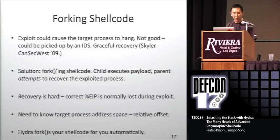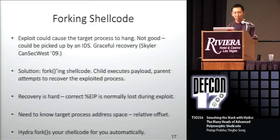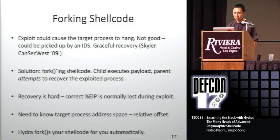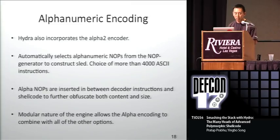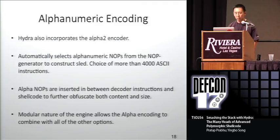This feature is kind of hard to get right — recovery is very hard. Once you exploit the process, you typically lose EIP. You have to do some disassembly on your target to figure out exactly where the proper offsets are and understand the target address space. But if you know how to do that, Hydra adds all this forking feature in automatically. Alphanumeric encoding: most polymorphic engines these days use alphanumeric encoding, which basically drops all of your shellcode into printable characters range. We use the Alpha2 encoder, with that functionality incorporated into Hydra. We also have alphanumeric no-op generators incorporated into the Alpha2 encoder as well.